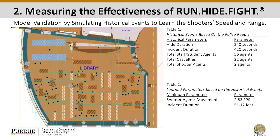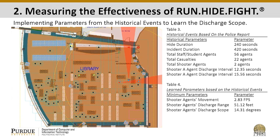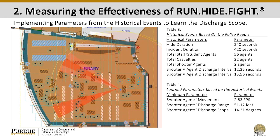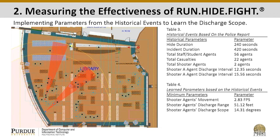By running multiple experiments, we found their minimum speed is 2.83 feet per second. We also wanted to learn the discharge range, which was 51.12 feet. Once we figured these components out, we used what we learned from the historical model to determine the discharge scope. The shooter is programmed to go after the nearest target in order to cause the casualties that occurred historically. There were 22 casualties as mentioned in the report, and by running the model based on the historical event, we found that the shooter's minimum discharge scope is 14.31 degrees.